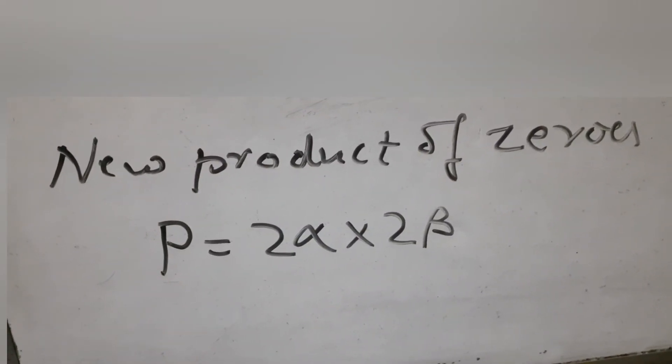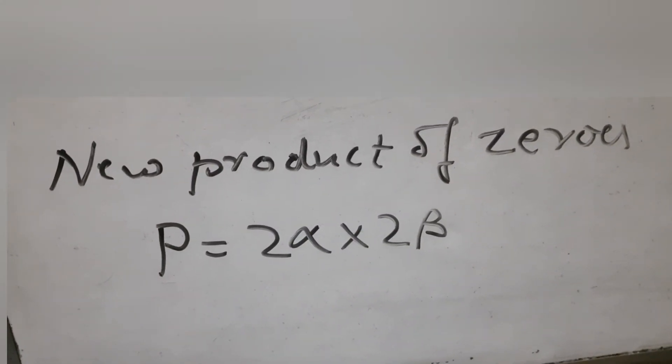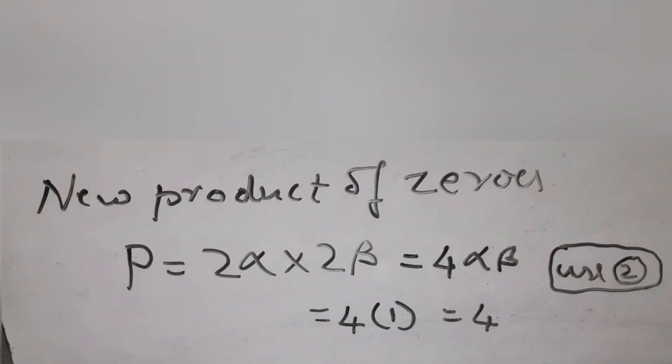Product of the new set of zeros is 2 alpha into 2 beta, which gives you 4 times alpha beta or 4 into 1 which is 4.